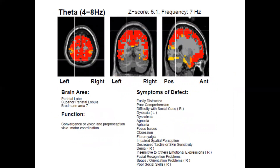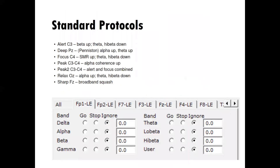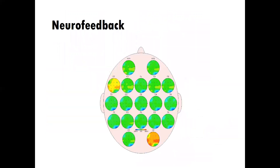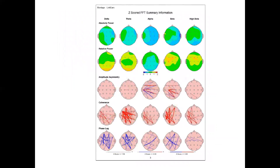We'll also learn about a really interesting innovation in neurofeedback within the last five years, which is this ability to look at subcortical functioning, not just on the cortex. We'll look at some standard protocols that are used in neurofeedback, some equipment that's used in neurofeedback, and the cost of it, which can be often exorbitant. And then we'll look at some of the findings from an actual client assessment that we'll be looking at and trying to understand what this means.